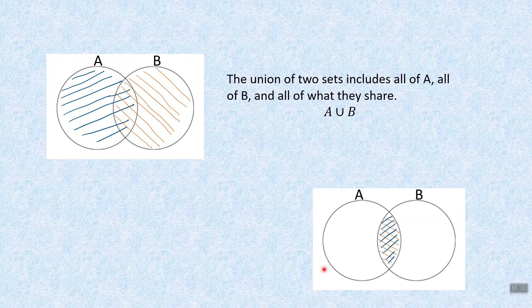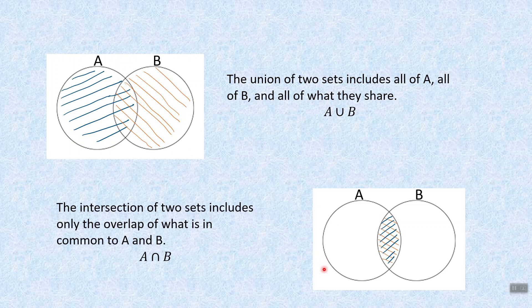Down here in the bottom right, we see the intersection of two sets includes only the overlap from A and the overlap from B. It's where they intersect or overlap each other. It's in A and in B. So you can make a little crossbar here. A and B, that's where they share their edges.